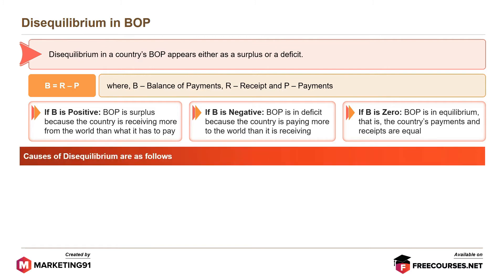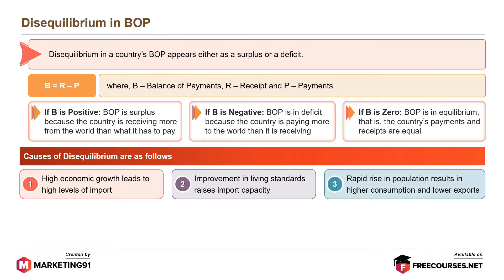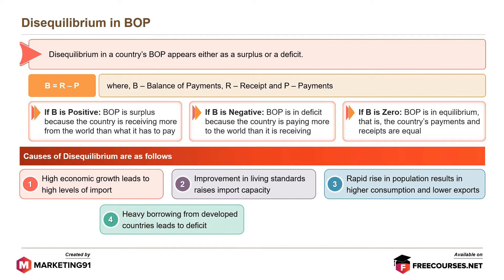Causes of disequilibrium include: high economic growth, which leads to high levels of import; improvement in living standards, which raises import capacity; rapid rise in population, resulting in higher consumption and lower exports; heavy borrowing from developed countries, which leads to deficit; and inflation, which causes exports to fall.